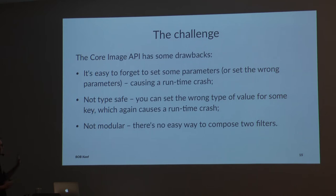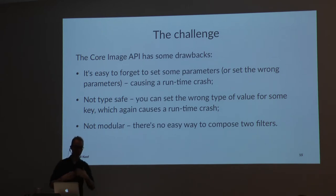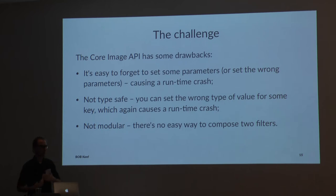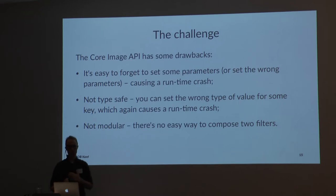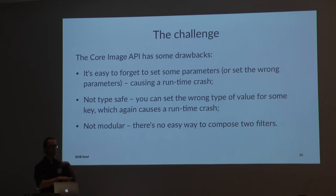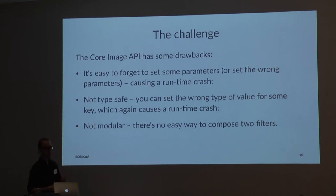Core Image does amazing stuff, but looking at the API it has drawbacks. If you forget to set parameters or set the wrong ones, you might get a runtime crash — the filter tries to run, reads from the dictionary, and fails with a missing key. It's also not type-safe: the dictionary maps keys to any type, so you could set a float instead of a core image object and get a runtime error. And it's not modular — there's no easy way to compose two filters. If I want to blur and then add a color overlay, I have to set up these big dictionaries over and over again.